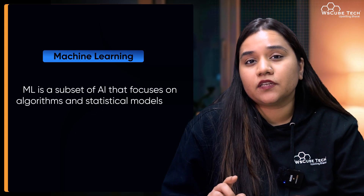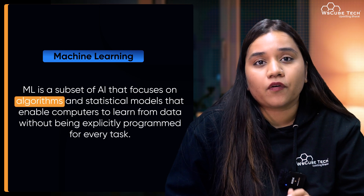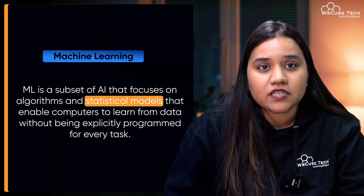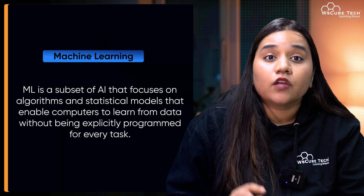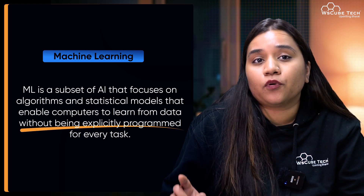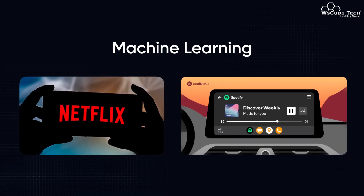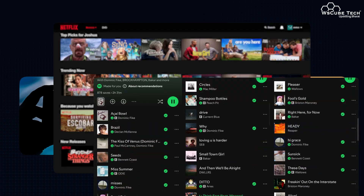Next comes machine learning. Machine learning is a subset of artificial intelligence that focuses on algorithms and statistical models that enable computers to learn from data without being explicitly programmed for every task. A great example is recommendation systems like Netflix or Spotify — these systems analyze your viewing or listening history and suggest new content based on your previous preferences, tailored just for you. ML algorithms improve over time with more data, learning patterns and making decisions based on past experiences.